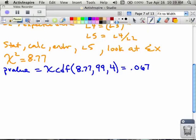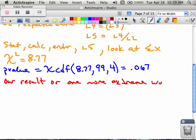Okay, so finding our p-value again, it's the same as before, chi CDF. 8.77 is our chi-square value, comma 99, because you're going to 99 places past zero, and then 4 for degrees of freedom from our row column thing. And then you draw your conclusion, which is the same as we have in the past. Our result, or one more extreme, would occur 6.7% of the time if H₀ was true.